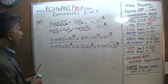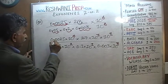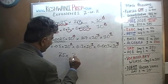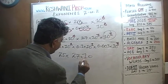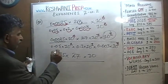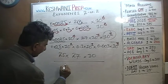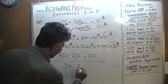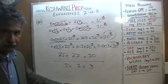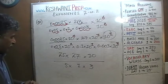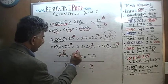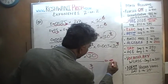Now everything is in whole numbers. The numerator is 25 times 27 times 10; the denominator is 5 times 1 times 3. Divide top and bottom by 5: 25 becomes 5, and the denominator's 5 drops out. Divide top and bottom by 3: 3 drops out and 27 becomes 9. So we have 9 times 5 times 10 = 450. The answer is 450.